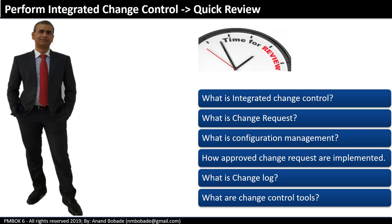Great job. You have completed one of the critical processes that is frequently used by project managers — Perform Integrated Change Control. On a critical large project, the project manager will spend a lot of time performing and executing this process. Let's do a quick review: we learned what the integrated change control process is, what a change request is, what configuration management is — including configuration identification, status accounting, and verification and audit — how approved change requests are implemented, what the change log is, and what change control tools are. With all this, we complete Perform Integrated Change Control. I hope you enjoyed this session. Keep enjoying your PMP journey — see you in the next session.